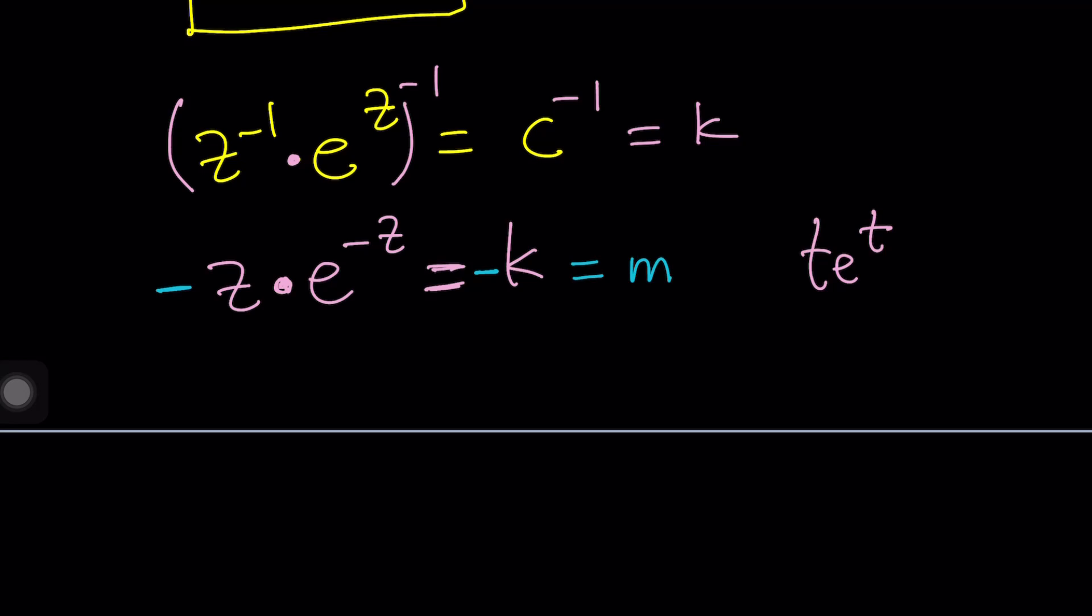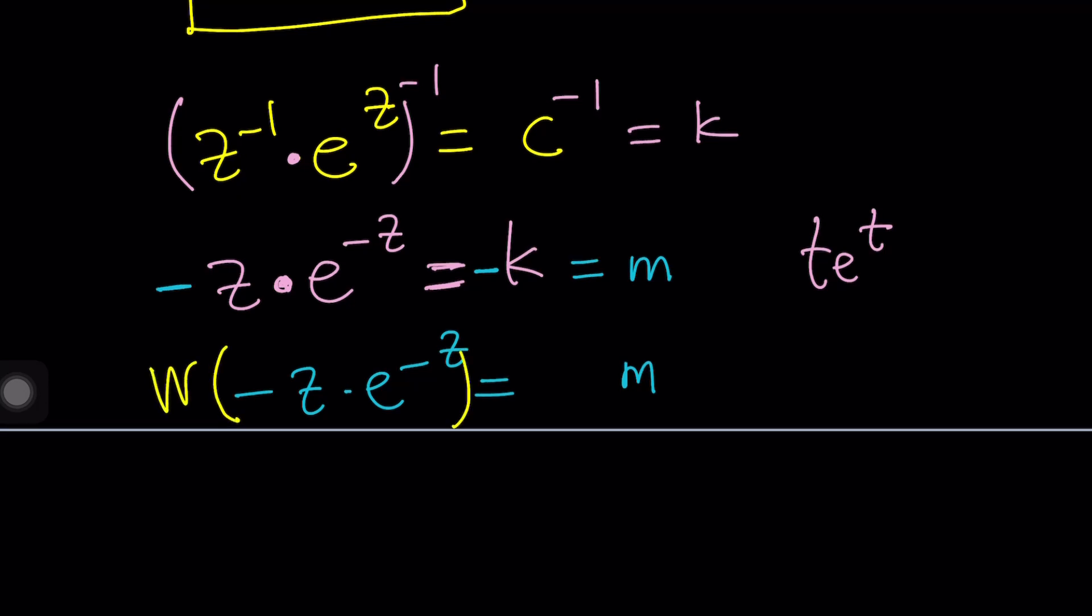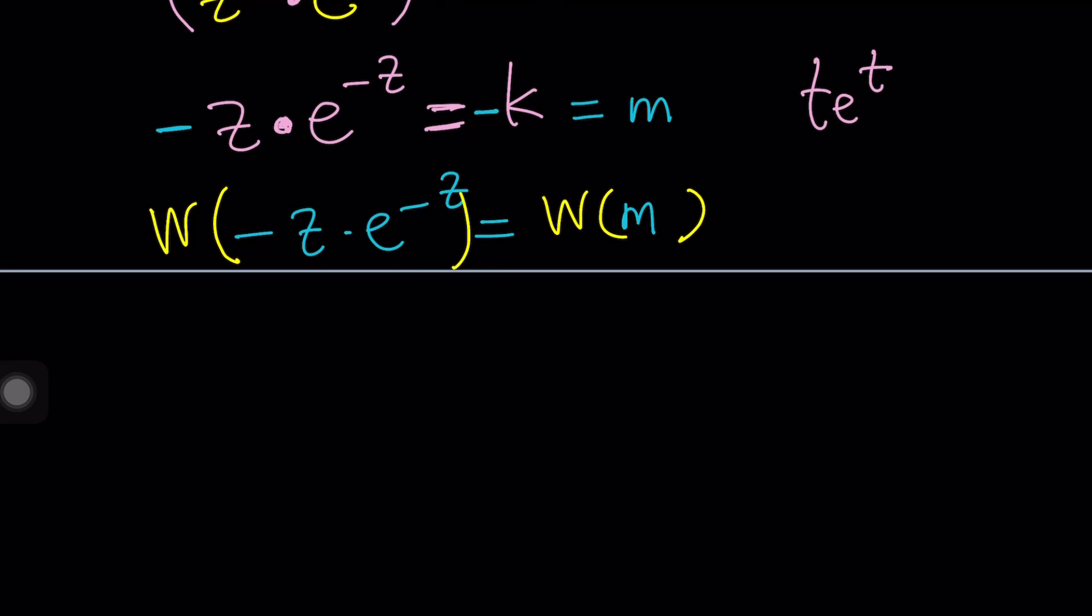But now, when I apply Lambert's W function on this and on M, here's what I'm getting. W of this equals W of that. And then, what is W applied on T E to the T? That should give you a T. So, this is going to be negative Z. Negative Z should be W of M. Wow, that was easy. So, Z is going to be negative W of M.